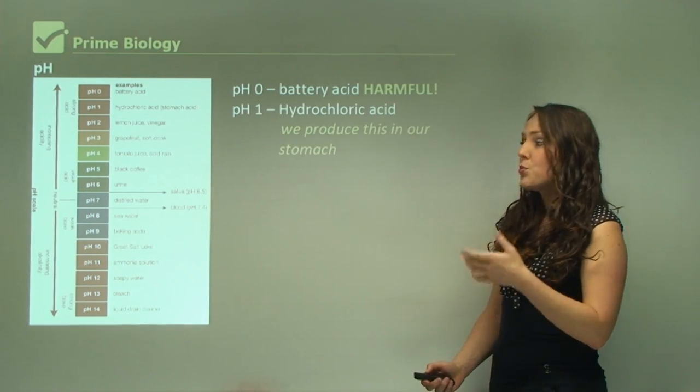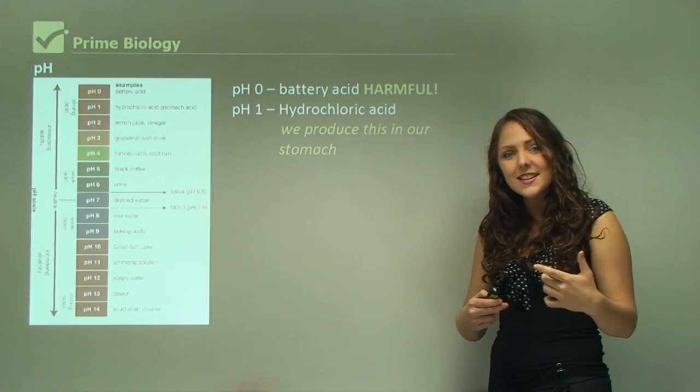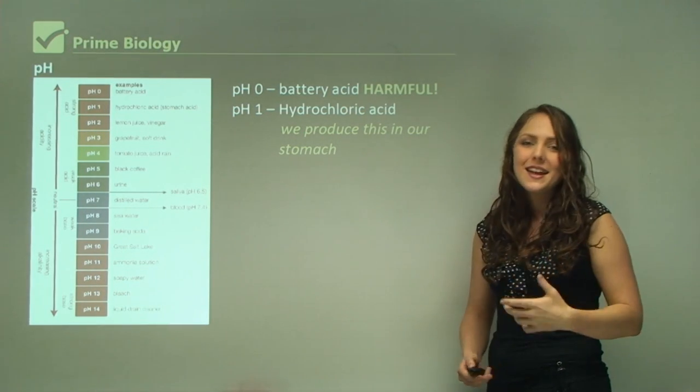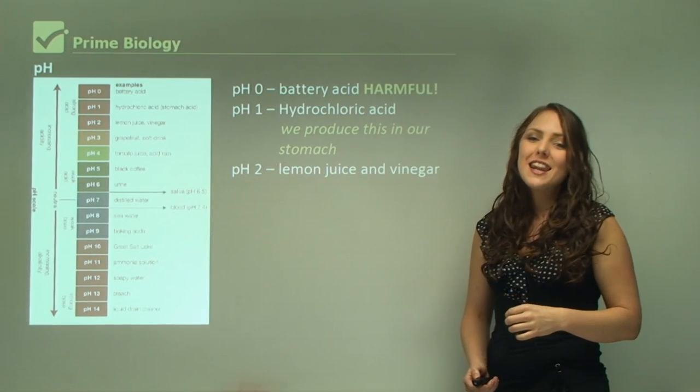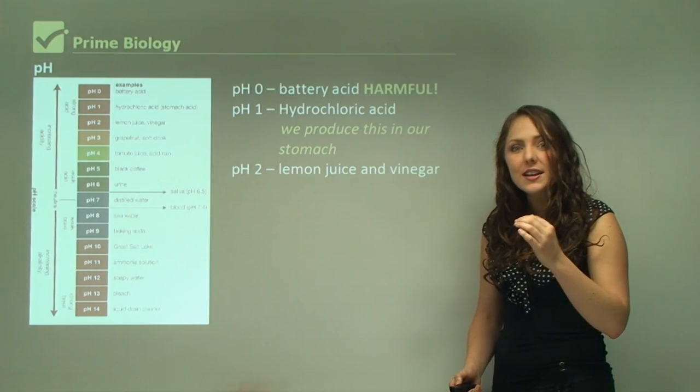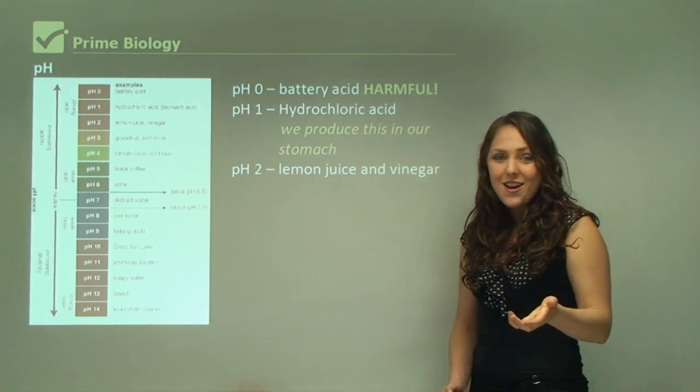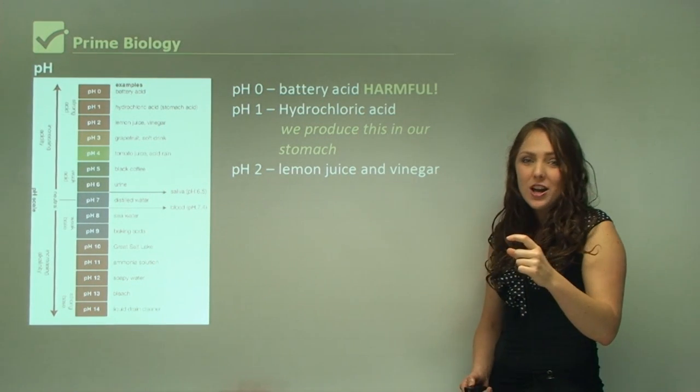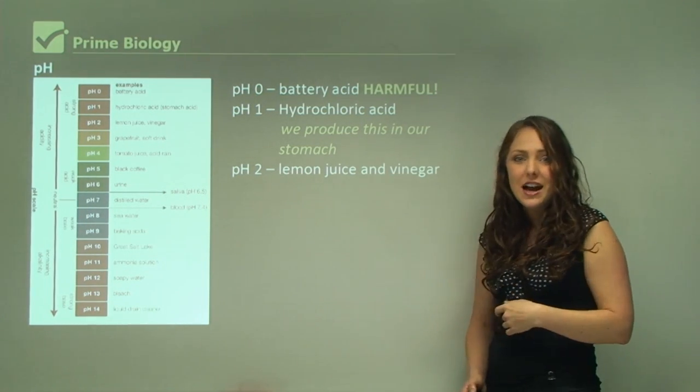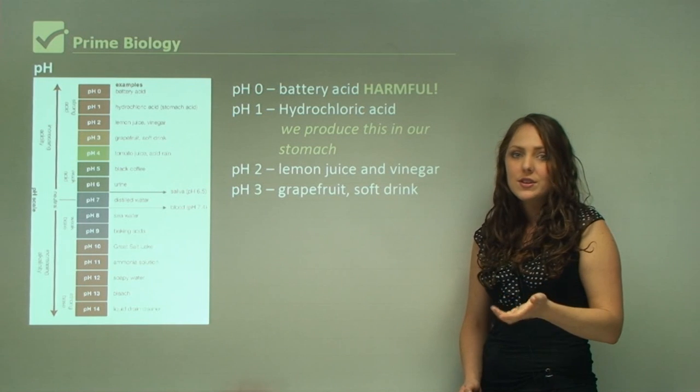This is a pH chart. At pH 0, battery acid is very harmful. At pH 1, hydrochloric acid is extremely harmful, but we do produce hydrochloric acid in our stomach between pH 1.5 and 3.5 depending on what we're eating. At pH 2 we've got lemon juice and vinegar. These are not harmful at all - in fact we can put it on our salads. We wouldn't consume it in large amounts, but there are actually diets out now where a shot of apple cider vinegar is meant to help bring your system pH back to normal.